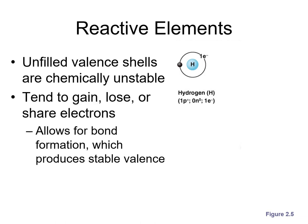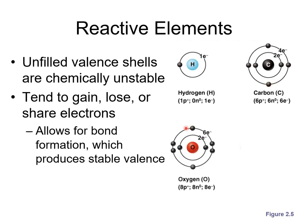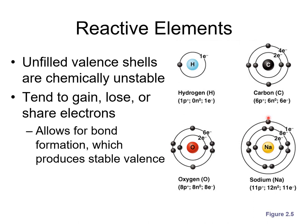In some cases, atoms will gain an electron to fill their outer shell; in other cases, they'll lose an electron; and in other cases, they'll share electrons. Hydrogen has only one electron in its outer shell — it wants two, so sometimes it'll give up that electron, sometimes receive one, sometimes share. Carbon has four electrons in its outer shell and wants eight, so it typically shares. Oxygen has six electrons in its outer shell and wants two more, typically sharing. Sodium has one electron in its outer shell and tends to just give it up to achieve a full outer shell.